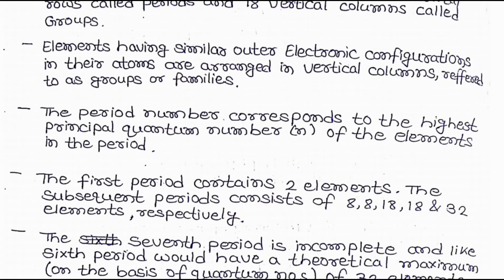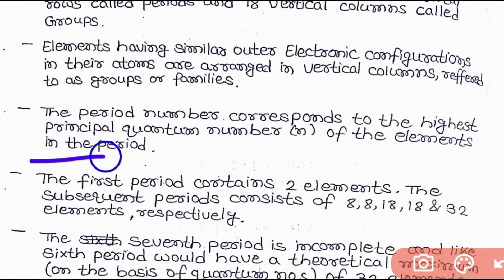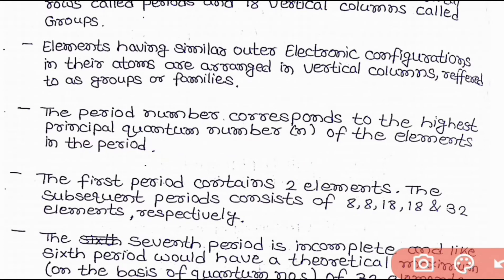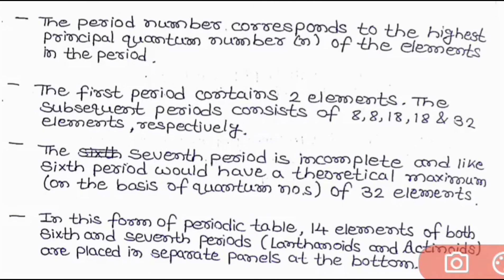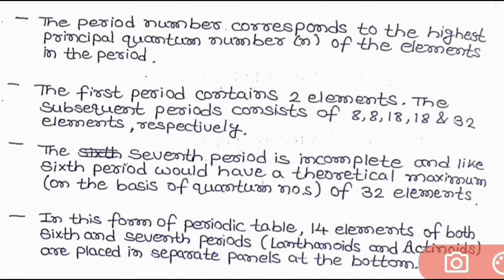The third characteristic is that the period number corresponds to the highest principal quantum number of the elements in that period. This means that if an element lies in the second period, its principal quantum number will be 2, and if it lies in the third period, its principal quantum number will be 3. The fourth characteristic is that the first period contains 2 elements and the subsequent periods contain 8, 8, 18, 18, and 32 elements respectively.